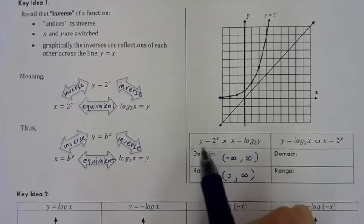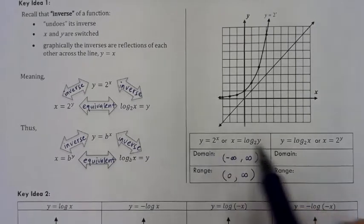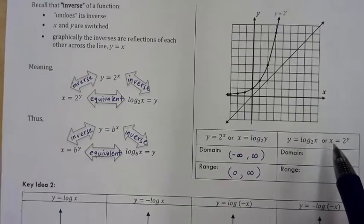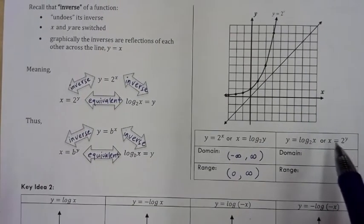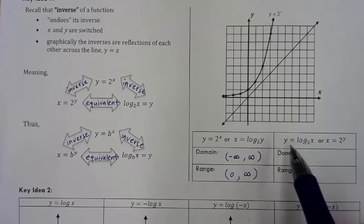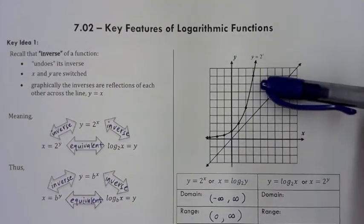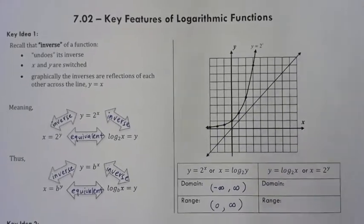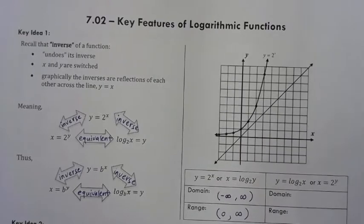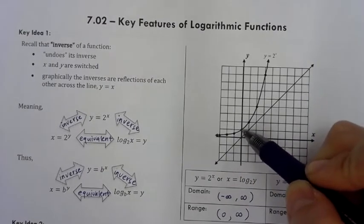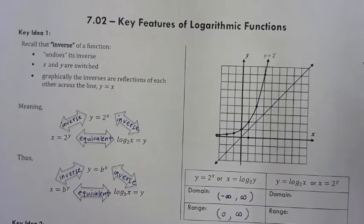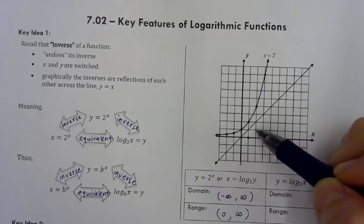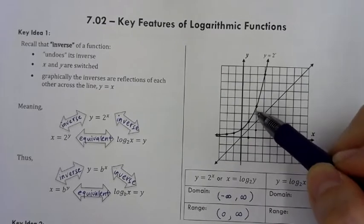Now let's graph the inverse of this exponential function. I switch x and y and rearrange into log form so y is isolated. Graphically, inverses are reflections across the line y equals x, and switching x and y coordinates gives us the reflected points. For example: (0,1) becomes (1,0); (1,2) becomes (2,1); (2,4) becomes (4,2); (3,8) becomes (8,3); (-1, 1/2) becomes (1/2, -1); (-2, 1/4) becomes (1/4, -2).